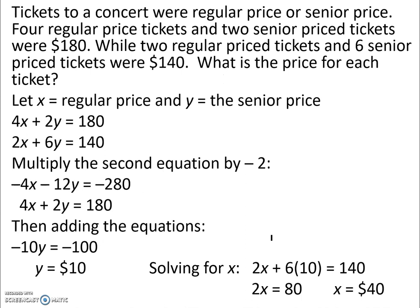Our next problem is tickets to a concert were regular price or senior price. Four regular price tickets and two senior price tickets were $180. While two regular price tickets and six senior price tickets were $140. What is the price for each ticket? Well, let's let x equal the regular price and y equal the senior price.